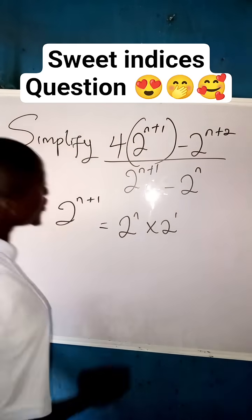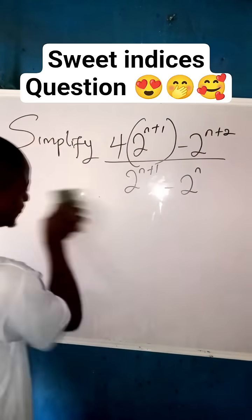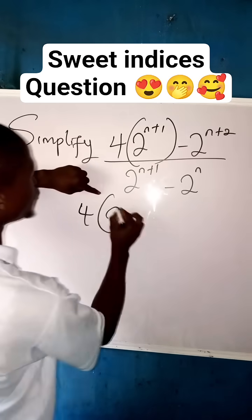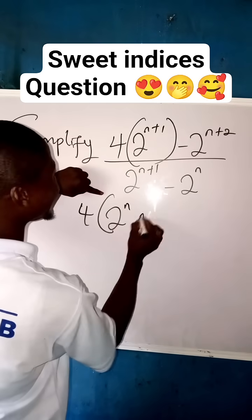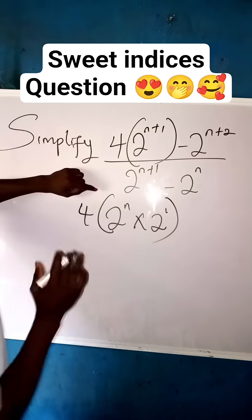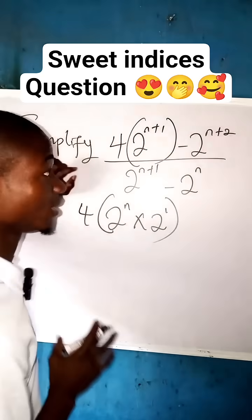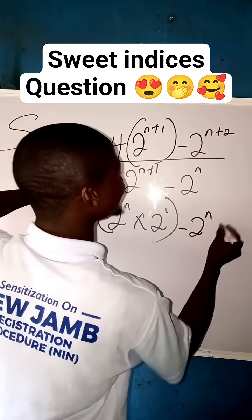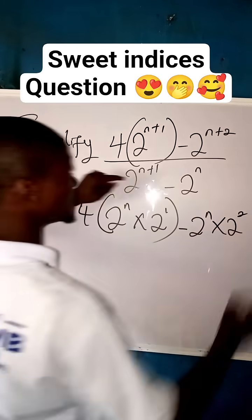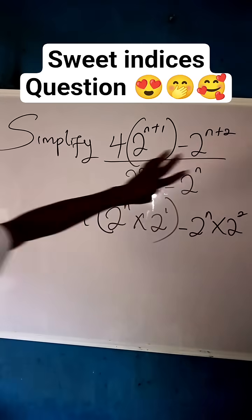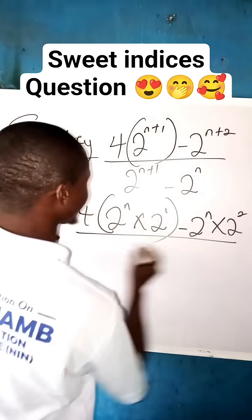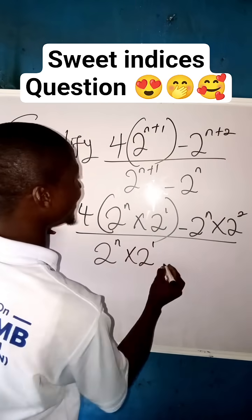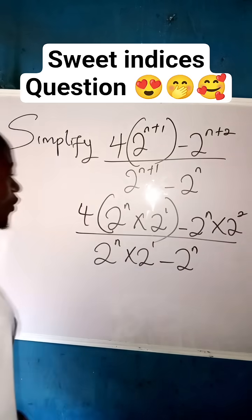So what you are going to have is: 4 times open bracket 2 to the power of n times 2 to the power of 1, minus 2 to the power of n times 2 to the power of 2, all over 2 to the power of n times 2 to the power of 1 minus 2 to the power of n.